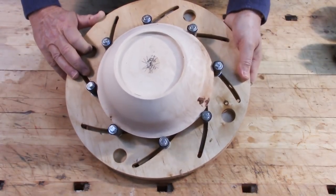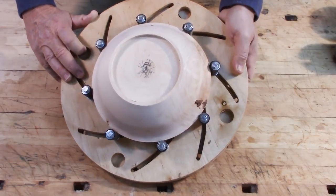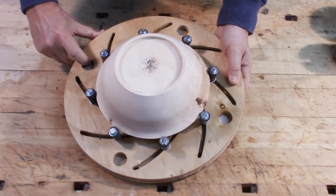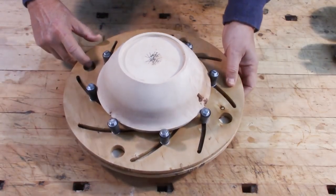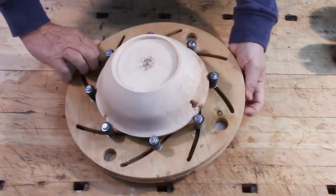The Longworth chuck addresses that. And you can buy these commercially. They tend to be expensive, $200 to $300. I tried making one. It works okay. I don't use it that much, but I haven't been turning any bowls lately either. There's a few other chucks.